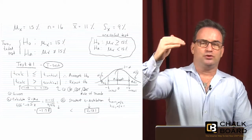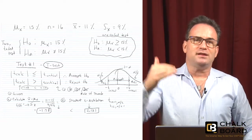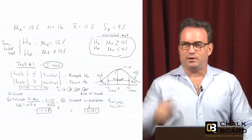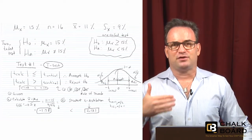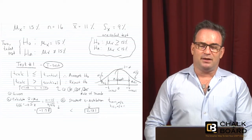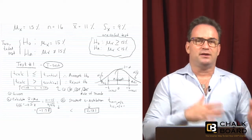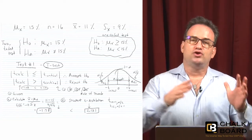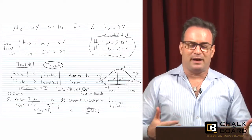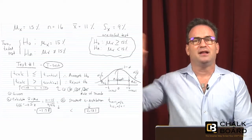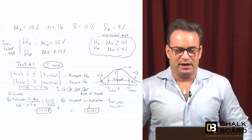We set up our hypothesis test first, and we're going to do a two-tailed test. A two-tailed test has equal to or not equal to as the null and alternate hypothesis, whereas a one-tailed test uses inequalities — greater than or equal to, or less than or equal to. Whenever there's an inequality, it's a one-tailed test; if it's equal to or not equal to, it's a two-tailed test. Most likely on the exam you're going to see everything done as a two-tailed test, with one-tailed tests more common at level two.